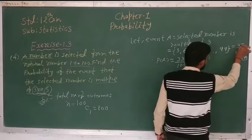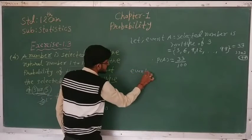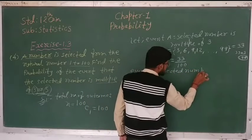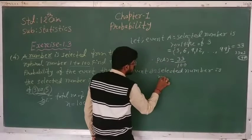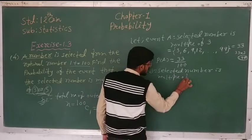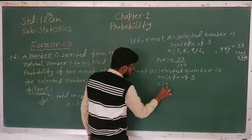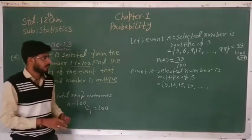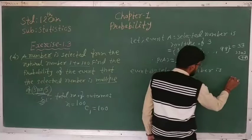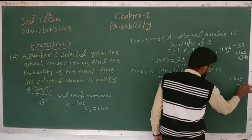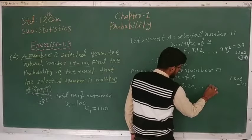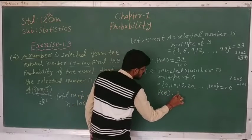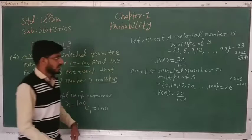Now for event B: the selected number is a multiple of 5. The multiples of 5 are: 5, 10, 15, 20 ... up to 100 (since 20 times 5 is 100). So the last number is 100 and the total count is 20. Therefore P(B) = 20/100.